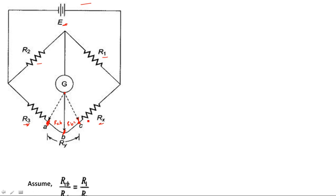Here we assume a condition such that RBC/RAB = R1/R2. Everything in the derivation starts from this condition. Our aim is to calculate the unknown resistance value Rx by considering the bridge in balanced condition.